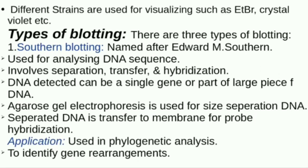When we detect DNA, it can be a single gene or a large piece of DNA — we detect only a single gene. We perform agarose gel electrophoresis for size separation. When DNA is separated, we transfer it to the membrane, then we do cross hybridization. The application of Southern blotting includes phylogenetic analysis and gene rearrangement.